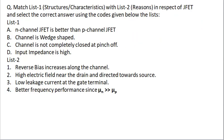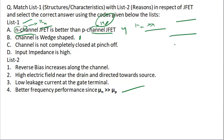This question is in which we have to match list one with list two. First is N channel JFET is better than P channel JFET. We know that N channel is related with the mobility of electrons and P channel is related with the mobility of holes. Therefore, we know that mu N is much greater than mobility of mu P. Therefore, fourth will be matched with A. Channel is tapered because the reverse bias increases along the channel.